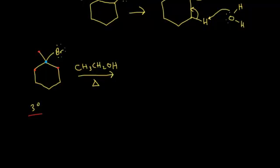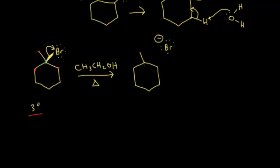The first step: the leaving group leaves to form a carbocation. In the previous example water was the leaving group; here the halogen is the leaving group. The two electrons in the carbon-bromine bond kick off onto bromine. Bromine, which had three lone pairs, now has four lone pairs, giving it a negative one formal charge. The carbon loses that bond and gets a plus one formal charge. Bromine is a stable leaving group because it now has the electron configuration of a noble gas.